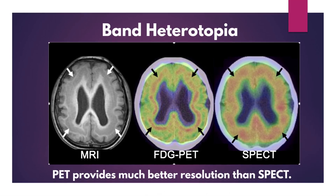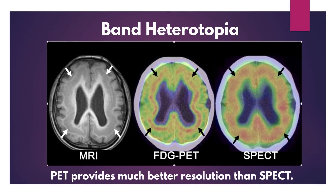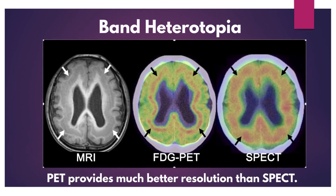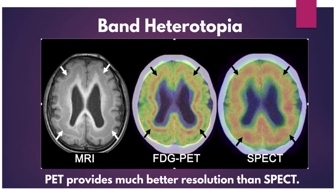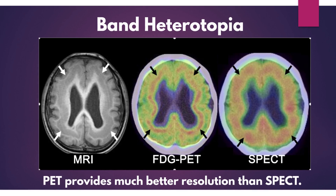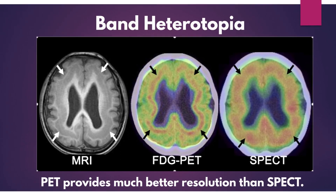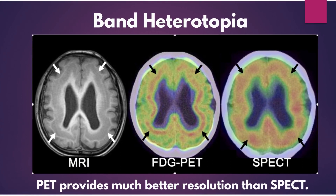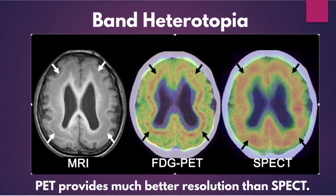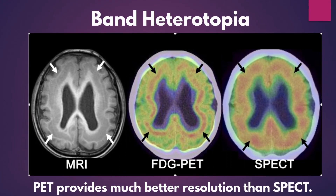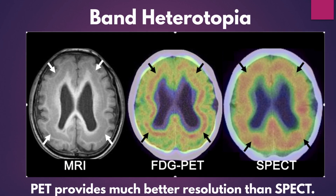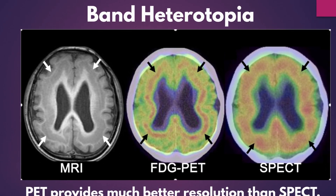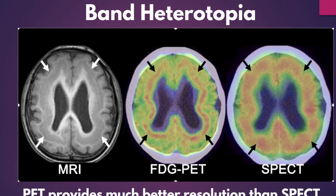One of the reasons why PET has better detection of epileptic focus in the interictal phase than SPECT is its higher spatial resolution. Let's compare the resolution in a case of neuronal migration disorder, band heterotopia. Fluorodeoxyglucose PET shows that glucose metabolism in the band heterotopia is higher than that in the overlying cerebral cortex, but in SPECT, the accumulation of the heterotopia and that in the cerebral cortex are integrated and cannot be distinguished.